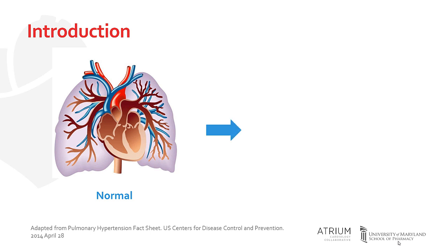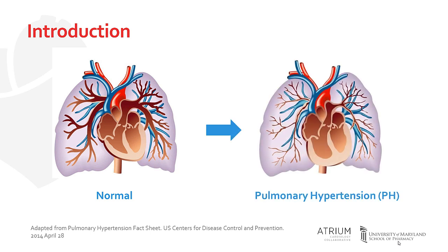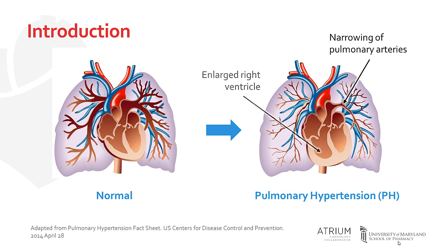To begin, pulmonary hypertension, or PH, is a clinical syndrome characterized by narrowing of the pulmonary arteries. If left untreated, the increased pressure that often results can produce enlargement of the right ventricle, and in many cases, right ventricular failure.